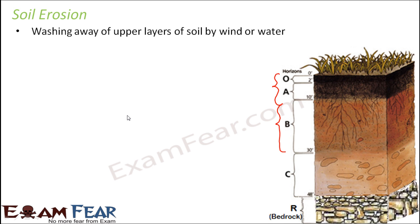And when it gets washed away, it is a disaster because we are actually losing the most important layers of soil — the layers which are rich in all the nutrients and all the minerals. So we do not want to lose that because if we are losing that, we are actually losing the part of the soil because of which crops are able to grow.